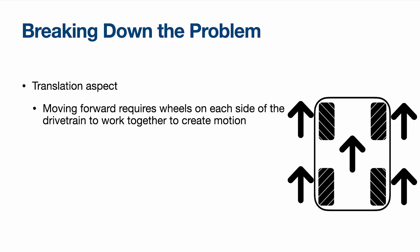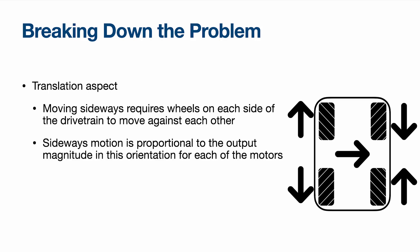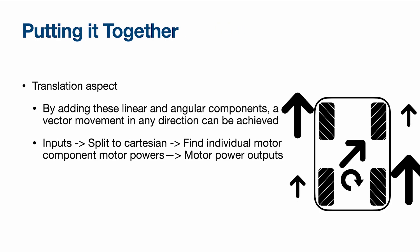Next, you have the translation aspect. Moving forward is fairly simple — just like a tank drive, you move all the wheels forwards and it moves forwards. Moving sideways is way more difficult than either of the other two, but if you break it down and look at how the wheels move when you want it to go sideways, you can figure it out. If you just add all the individual inputs, you get some output. You go through the sequence of inputs, split to Cartesian X and Y components of the joysticks, find the individual motor components for each Cartesian input, add them all together, and get the final output.